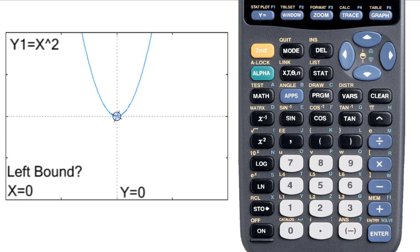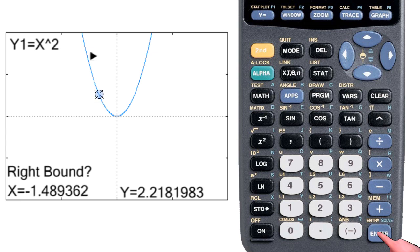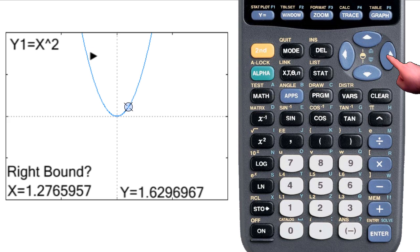It wants us to tell it the left side of the interval. So I move the cursor to the left side of the curve, then hit enter. Then it asks for the right bound, so I move the cursor to the right side of where the minimum is going to be, and I hit enter.